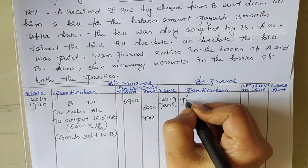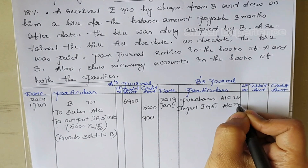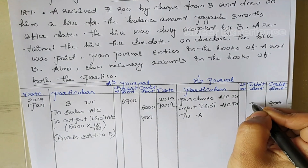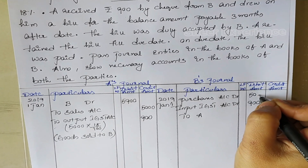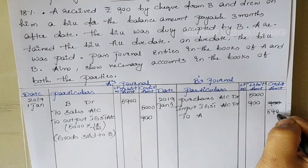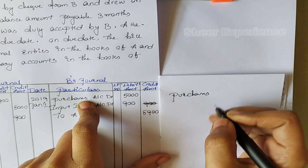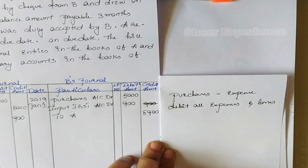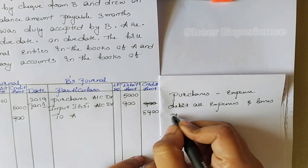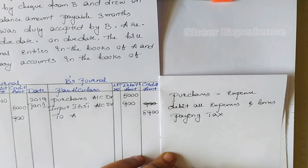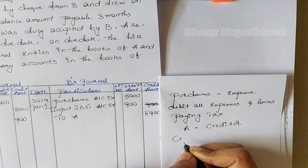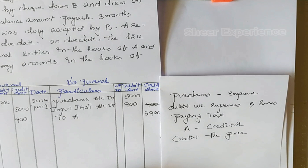In B's books, B is purchasing goods from A. So the journal entry is: Purchase Account debit, Input IGST Account debit, to A. For IGST it is 900 in the debit column, for Purchase Account it is 5000, and for A it is 5900 in the credit column. Purchase is an expense — whenever expense increases we need to debit it. Input GST on goods is an asset for the purchaser, so whenever asset increases we debit it. A is the creditor — as per the personal account rule we credit the giver, as liability is increasing.